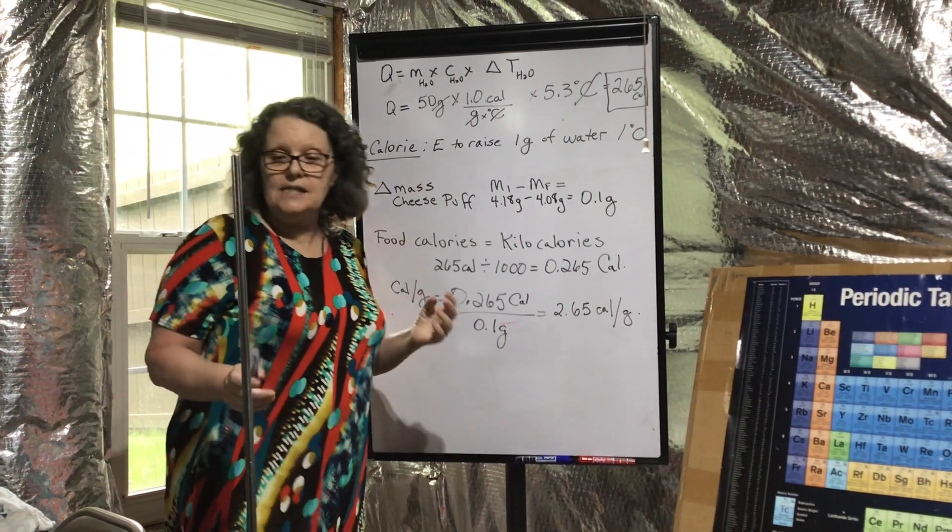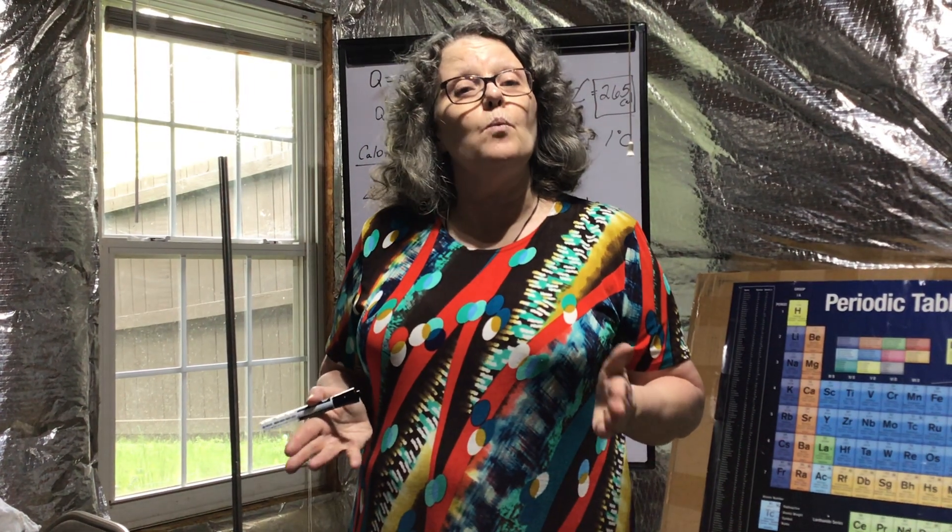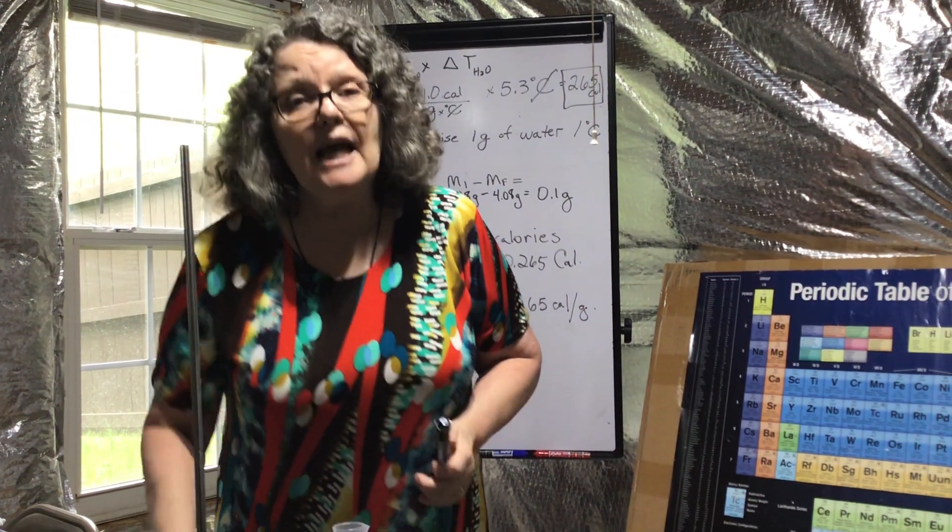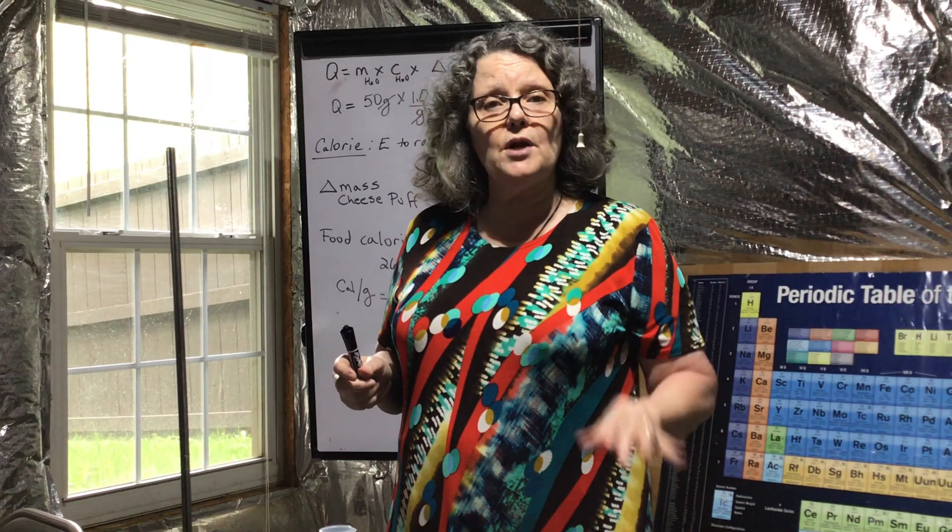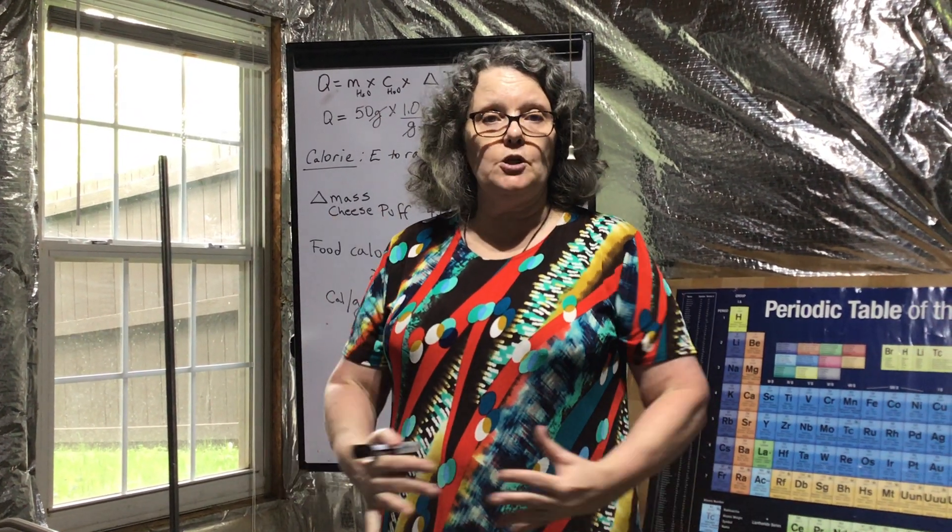If you compare this to the actual calories, say in a puff or a veggie puff, you're going to see a big margin of error. The reason is we're using a soda can for a calorimeter. When nutritionists figure out the number of calories per gram for food, they're using something called a bomb calorimeter - it's sealed.